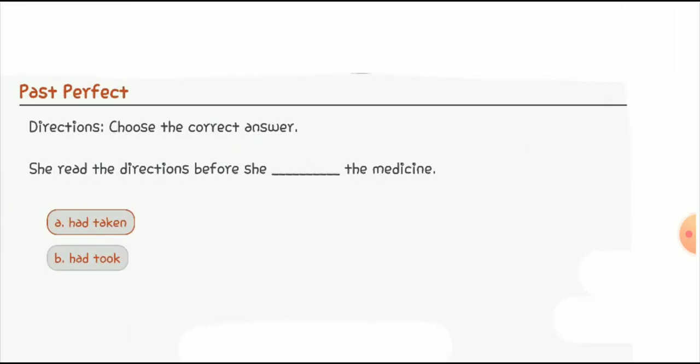Quiz number four: 'She read the directions before she ___ the medicine.' The answer is 'she had taken.' 'Had taken' is the correct option because 'had' is the helping verb of the past perfect tense and 'taken' is the past participle. So the full sentence is: 'She read the directions before she had taken the medicine.'